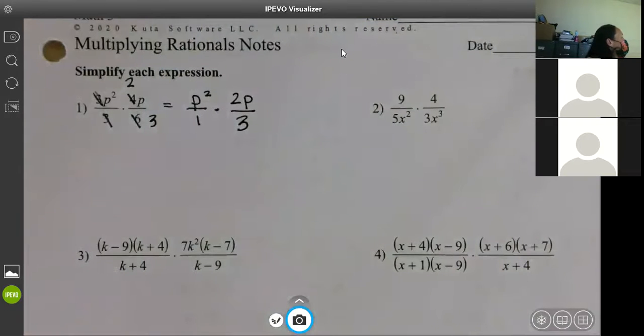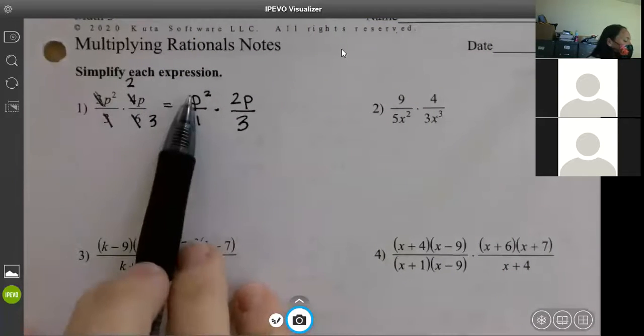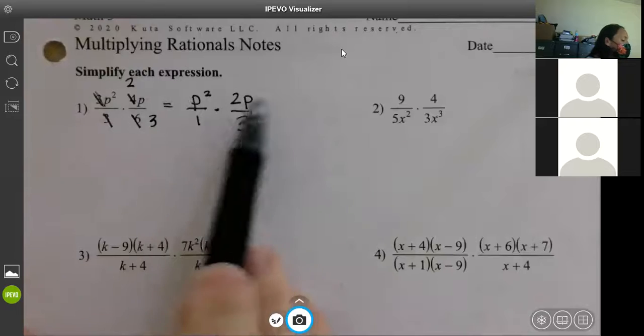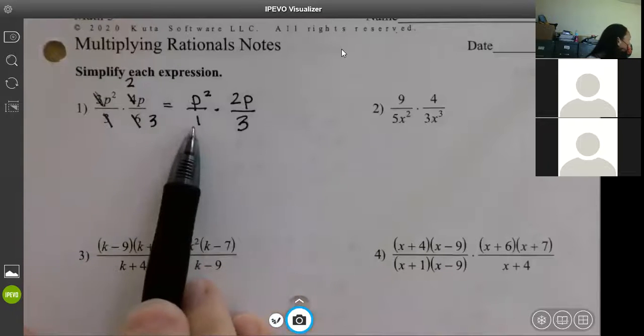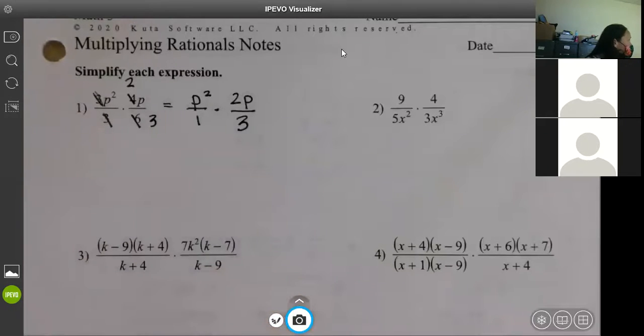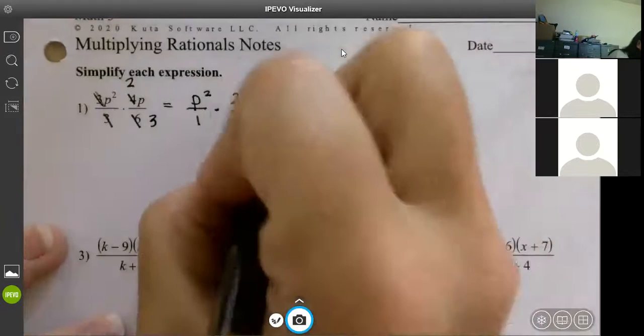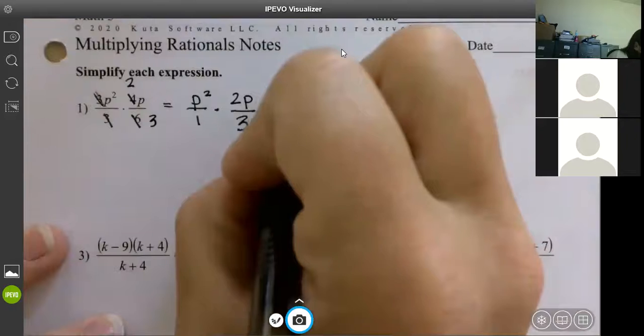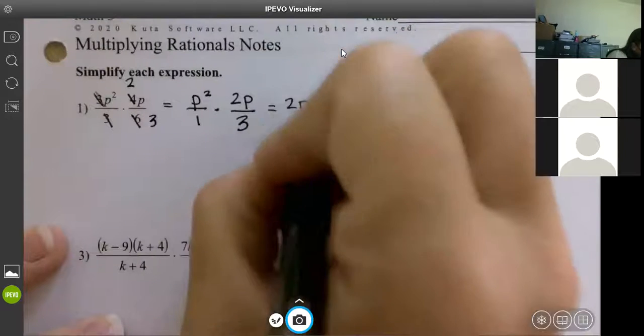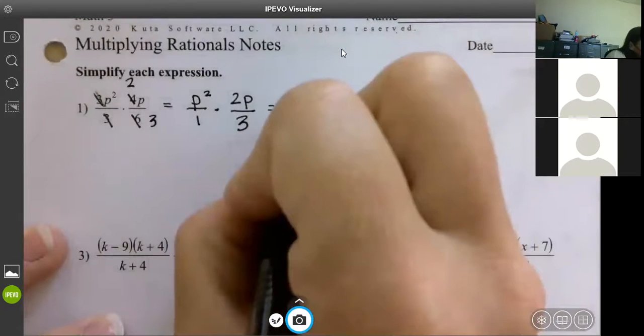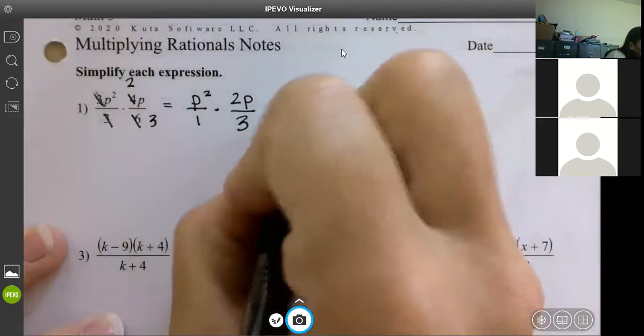So now what I have left is a P squared, you can put over one. I'm just doing it for looks more than anything. And then I have a 2P over three. The next thing you want to do is look diagonally. Is there anything on this top and this bottom that will reduce? This one doesn't have anything. So then you just squish them together. So what is P squared times 2P? 2P cubed. And on the bottom, one times three? Three.